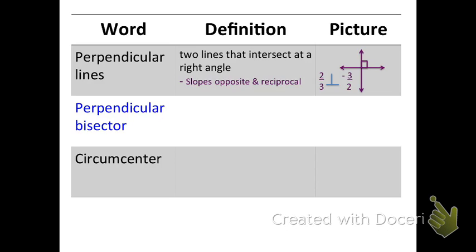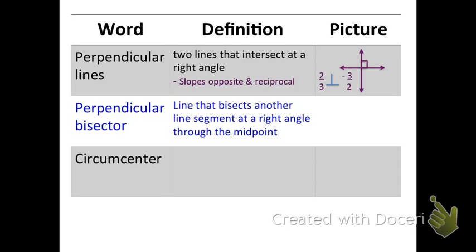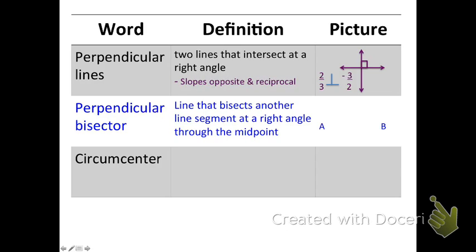A perpendicular bisector is a line that bisects another line segment at a right angle through the midpoint. So, kind of like we just did on bisect, that last one was a perpendicular bisector. The only difference between a bisector and a perpendicular bisector is that the two lines intersect at 90 degrees. So, we have AB, we have our line segment, we have our perpendicular bisector at point M, and we have our right angle. And the way you know that it's the perpendicular bisector is your orange bars that connect.